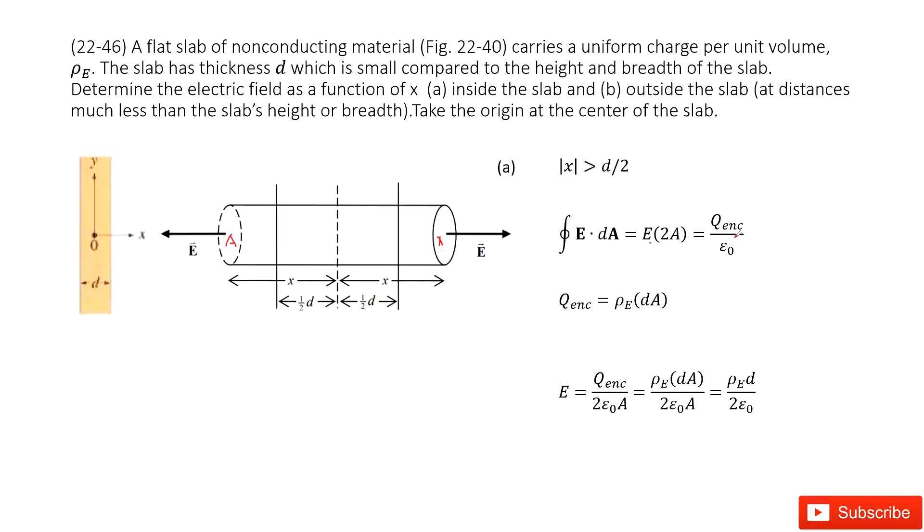So now equal to enclosed charge divided by epsilon naught. Now what is enclosed charge? In this case, just this slab. So we use the density times d times A. So A is cross-sectional area. The d is the length for this part. So you can see this is A times d times the charge density. So now we input the enclosed charge